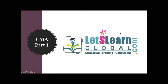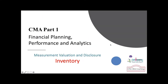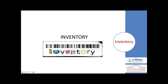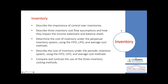Welcome to the session on CMA Part 1: Financial Planning, Performance and Analytics. We are discussing measurement, valuation and disclosure. In previous sessions we covered inventory — what is inventory, how do we measure, value and disclose it in financial statements, how to control inventory, and cost flow methods in retail and manufacturing industries such as FIFO, LIFO, and average methods.